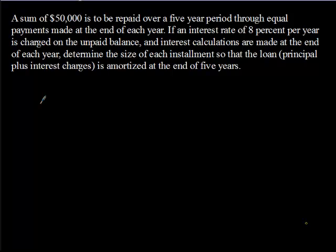Our first problem for today reads: a sum of $50,000 is to be repaid over a 5-year period through equal payments made at the end of each year. If an interest rate of 8% per year is charged on the unpaid balance and interest calculations are made at the end of each year, determine the size of each installment so that the loan — the principal plus interest charges — is amortized at the end of 5 years.